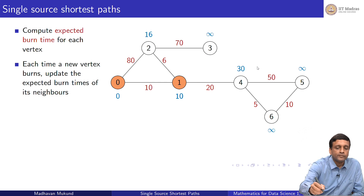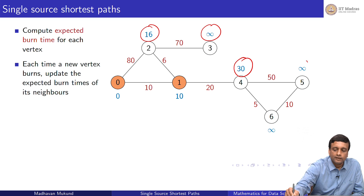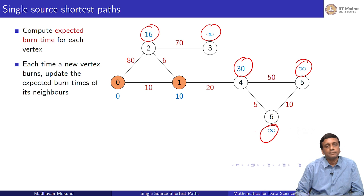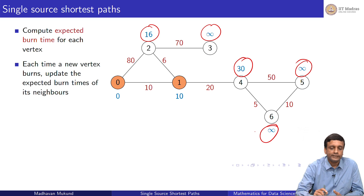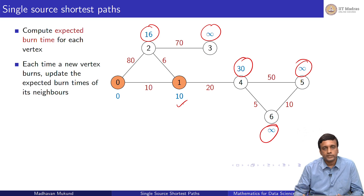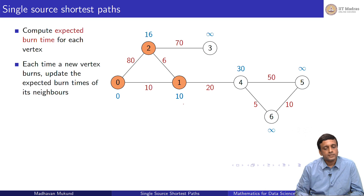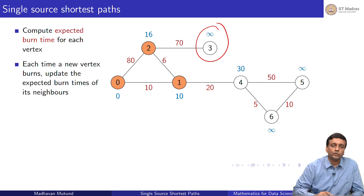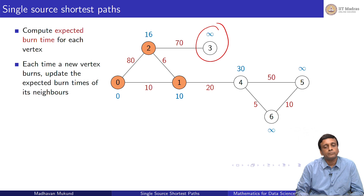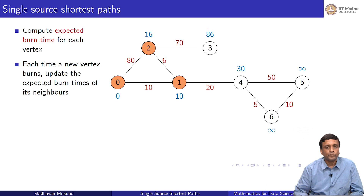Now, again, I look among unburnt vertices for the minimum time to burn. This is absolute time from t equals 0 — not 16 more units, but at t equals 16, which is 6 units from now. So at time 16, vertex 2 burns. When vertex 2 burns, I look at its neighbors which are not burnt — namely vertex 3 — and now I know vertex 3 is going to burn at 86. But vertices 5 and 6 are still unknown.